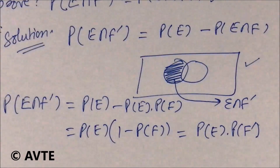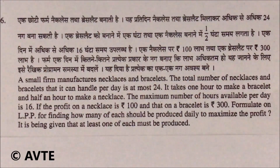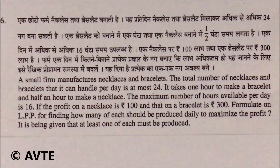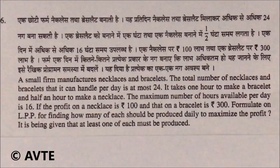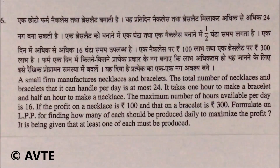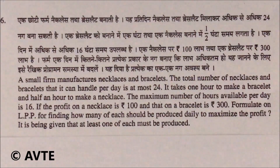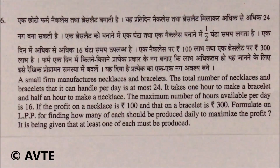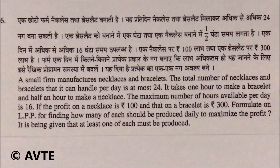Question number 6: a small firm manufactures necklaces and bracelets. The total number of necklaces and bracelets it can handle per day is at most 24. It takes one hour to make a bracelet and half an hour to make a necklace. The maximum number of hours available per day is 16. The profit on a necklace is ₹100 and on a bracelet is ₹300. Formulate an LPP for finding how many of each should be produced daily to maximize profit. It has been given that at least one of each must be produced.